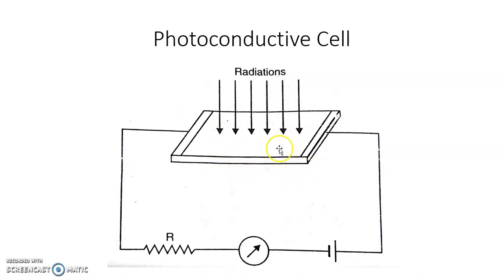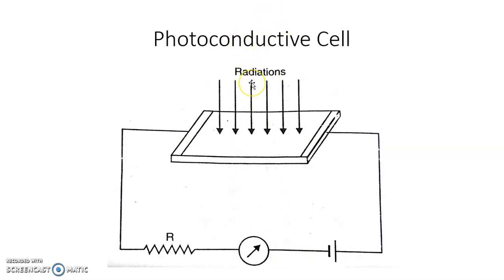As shown in the diagram, the selenium photo conductive cell consists of a semiconductor selenium kept between two electrodes. When light radiations fall on the semiconductor, its resistivity decreases and as a result its resistance also decreases, causing the current flowing through the material to increase to a large value. This increased current gives the value of the input light radiation. Therefore, the current flowing through the semiconductor is directly proportional to the light radiation falling on it.